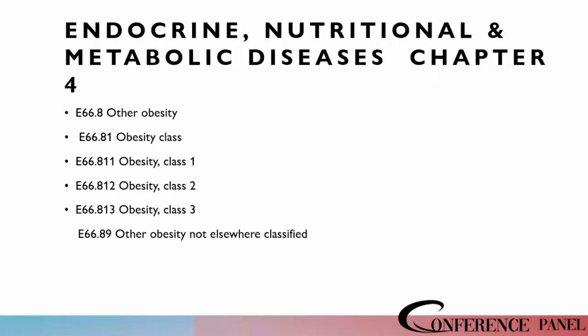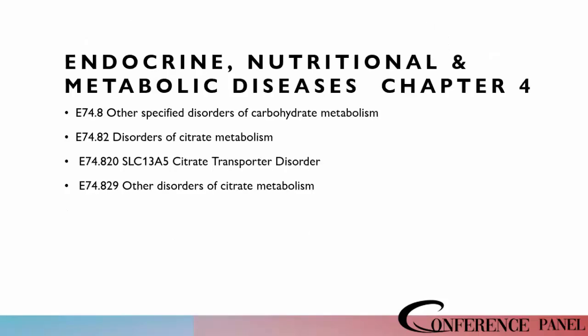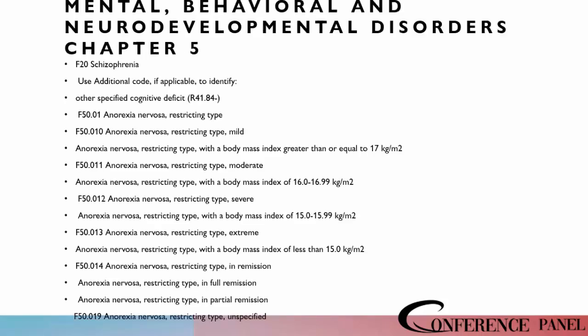Still in the endocrine section chapter four, we've got codes in the E34 category. Now we've got some new things in regards to obesity — class one, class two, class three — with some additional things in this chapter four. And that was it for chapter four.